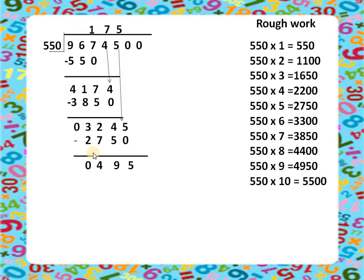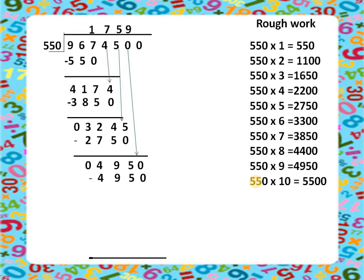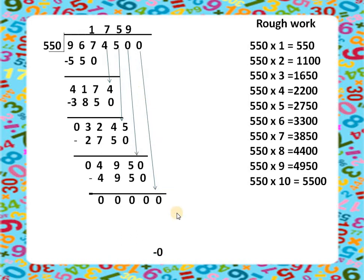There are still more digits to bring down. We bring down 0 to get 4950. From the rough work, 550 multiplied by 9 gives exactly 4950, so 9 is the quotient. We subtract and get 0. One more digit 0 remains to bring down. Subtracting 0 from 0 gives 0, so we write 0 on top as the quotient. The division process is complete.